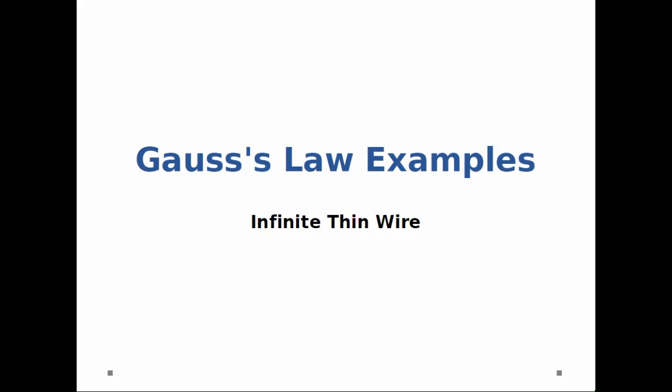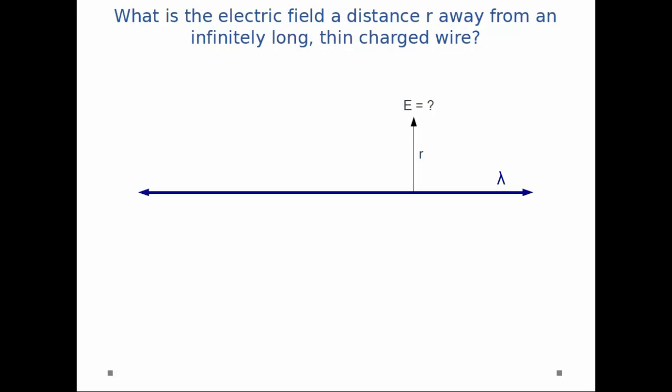We're going to look at an example with Gauss's law, specifically the infinite thin wire. I give you an infinite thin wire with charge density lambda, that's linear charge density, and you can see the wire in blue. What is the electric field some distance r away from this wire?